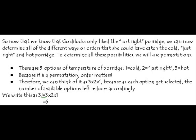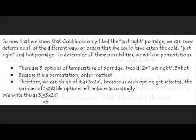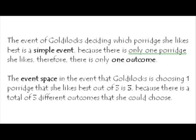Which equals 6. The event of Goldilocks deciding which porridge she likes best is a simple event because there's only one porridge that she likes. Therefore, there's only one outcome. The event space in the event that Goldilocks is choosing one porridge that she likes best out of 3 is 3, because there's a total of 3 different outcomes that she could choose.